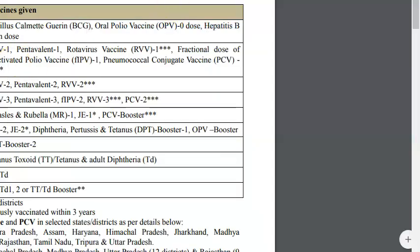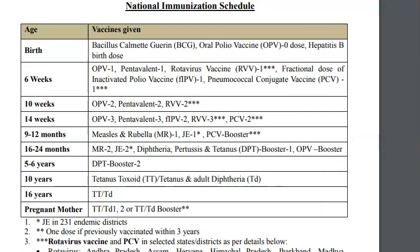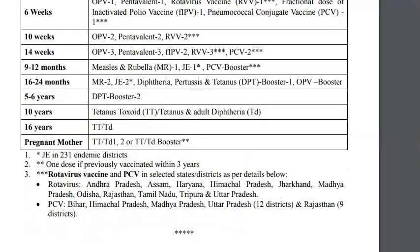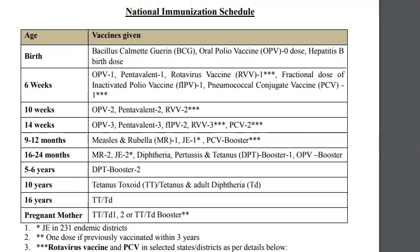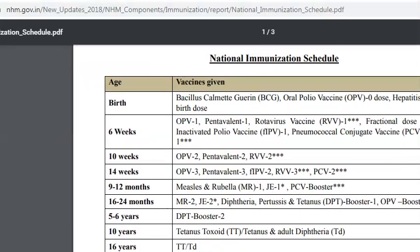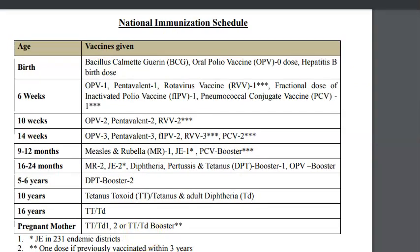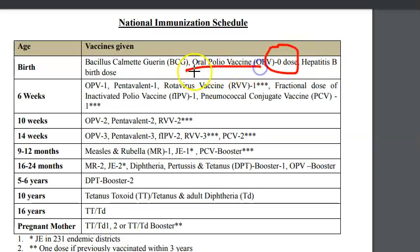The best way to look at the national immunization schedule is to go directly to the government website for the latest information. This is the national immunization schedule from the website of the Government of India. At birth, they give BCG, oral polio vaccine (zero dose), and hepatitis B.